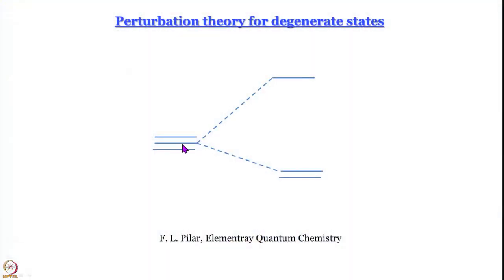Degenerate states are states that have the same energy. Perturbation more often than not changes the energies of degenerate states with respect to each other — that is called lifting of degeneracy. Examples include the Zeeman effect or Stark effect: application of a magnetic field or an electric field changes the energies of orbitals that were earlier degenerate in such a way that they are no longer degenerate.